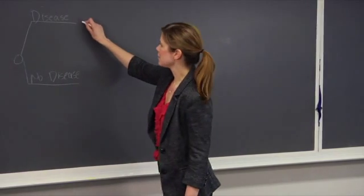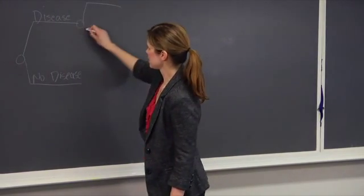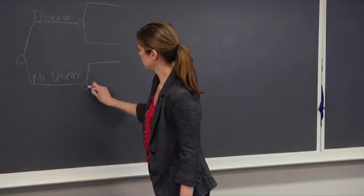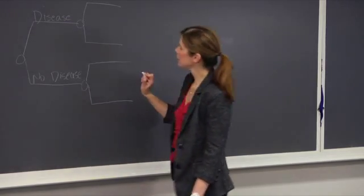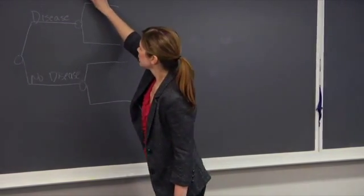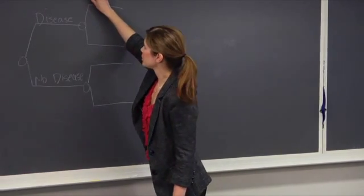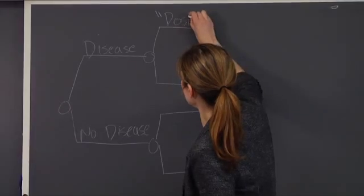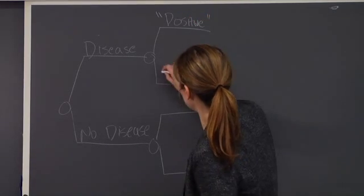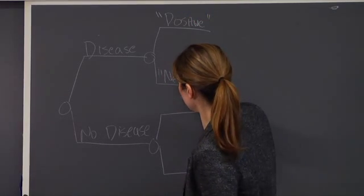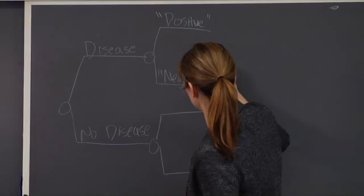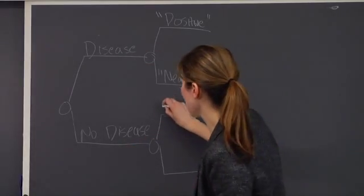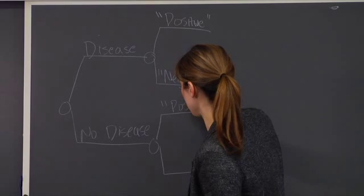From there, I can draw the second layer of branches. This second layer refers to whether or not a patient has a positive or a negative test result. Note that both types of patients can have positive or negative test results.